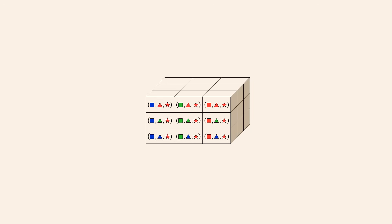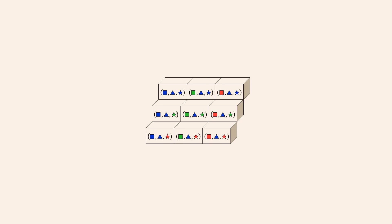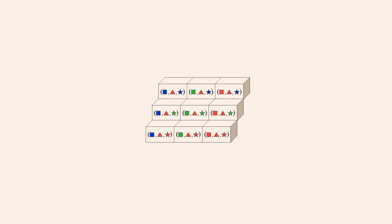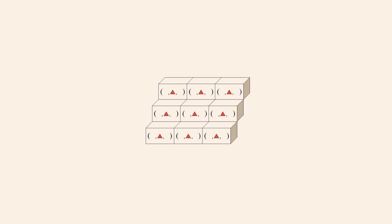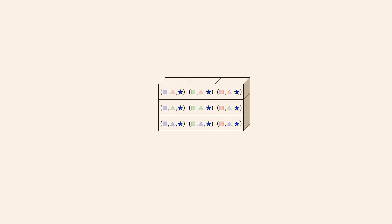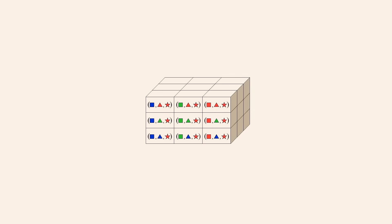Likewise, the second elements are the same in each of the three horizontal planes. The second elements in the bottom plane are blue triangles, the middle plane are green triangles, and the top plane are red triangles. This also applies to the third elements of the back, middle, and front planes. The third elements of the back plane are blue stars, the middle plane are green stars, and the front plane are red stars.